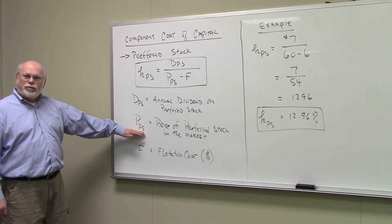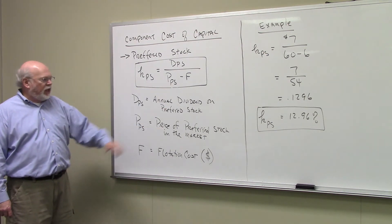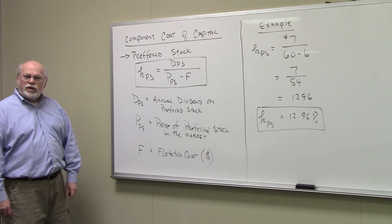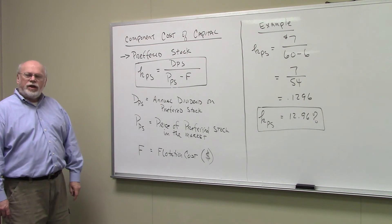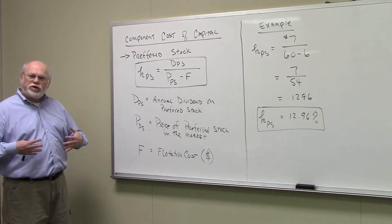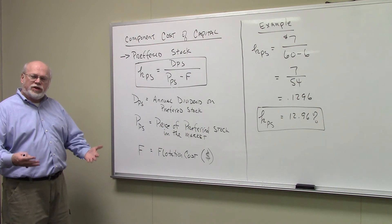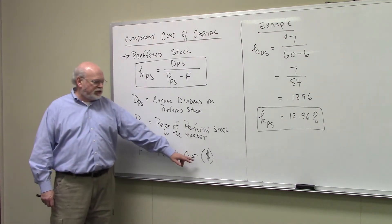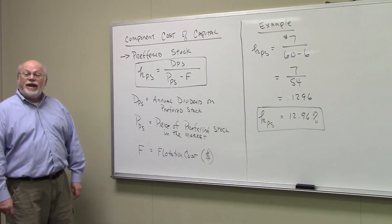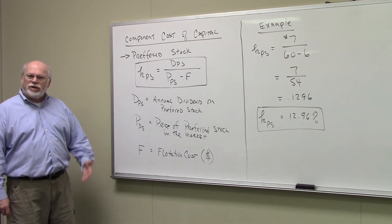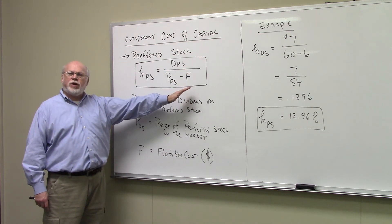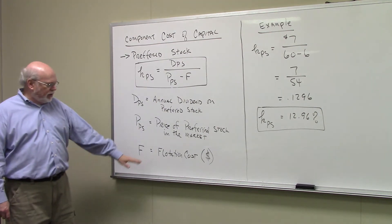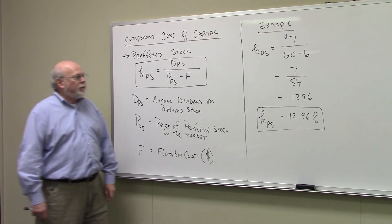P, the price of the preferred stock, is what you see in the denominator — the price of the preferred stock in the market. F is the flotation cost; this is what the investment banker is charging us to sell one share of preferred stock, expressed in dollar format. To get the net price of the preferred, which is what the denominator is, we take the market price of the preferred stock and subtract out the dollar cost of the flotation.